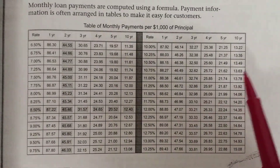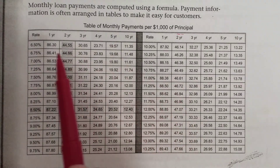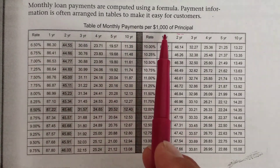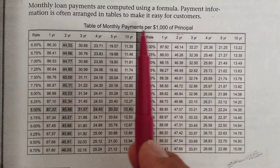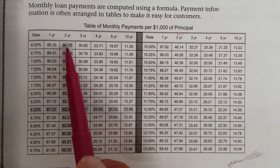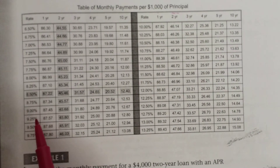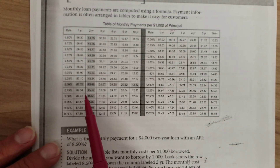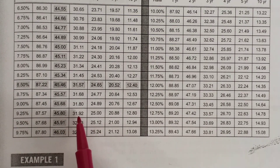Here's a table of monthly payments per $1,000 of principal — that's the amount you borrow. For example, at 6.5%, if you borrow $1,000 for a year, your payment would be $86.30. If you borrow $1,000 at 9.25% for three years, your payment would be $31.92 — for every $1,000 that you borrow.